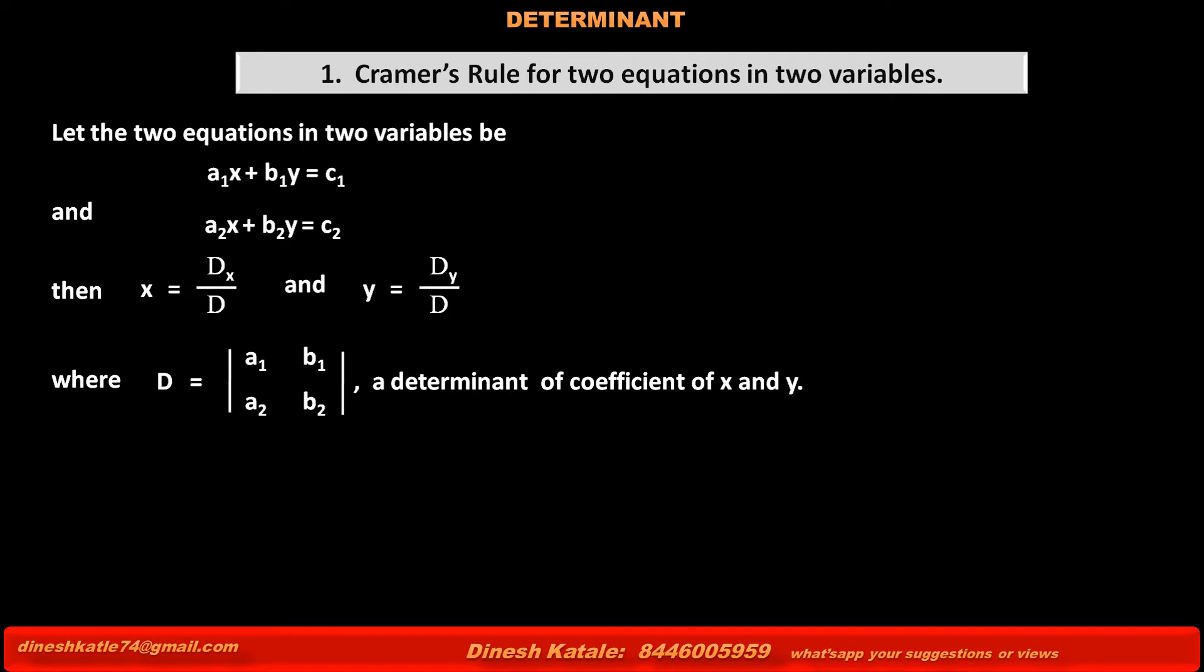In this determinant D, the first row a1, b1 are coefficients of x and y of the first equation, and the second row a2, b2 are the coefficients of same variables x and y of the second equation.